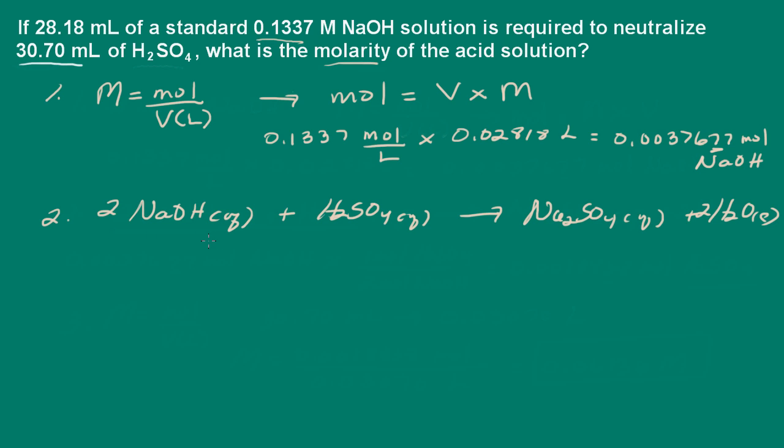We're going to have two moles of sodium hydroxide for every mole of acid. So we can use this as our mole ratio to go from moles of sodium hydroxide to acid. Let's go ahead and start.